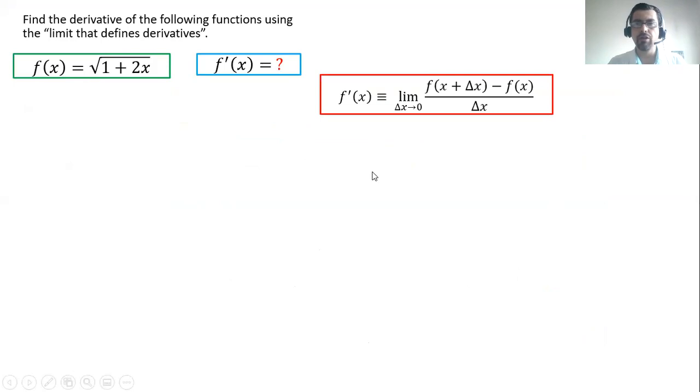The formula or the rule is the definition of a derivative. f prime of x, the derivative, is defined as the limit as x approaches 0 of the function at x plus delta x minus f of x, the original function, all over delta x.